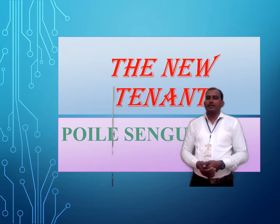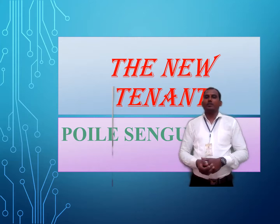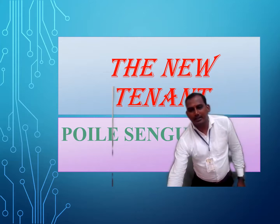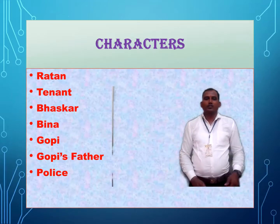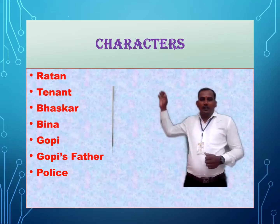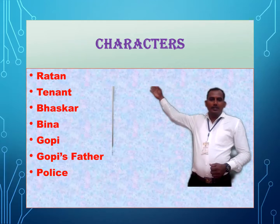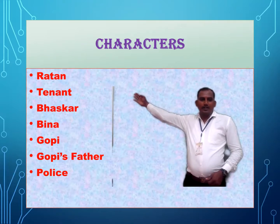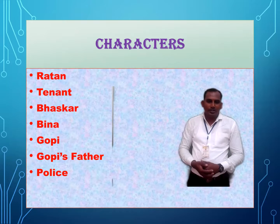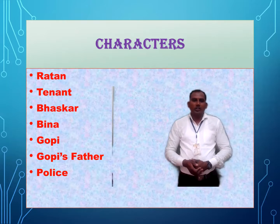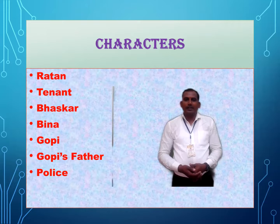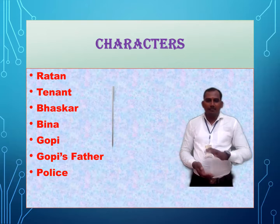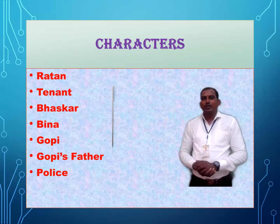There are some major characters in the story. The major characters are: Ratan, Tenant, Bhaskar, Bina, Gopi, Gopi's father, and the last one is Ulish. So these are the major characters of the story.